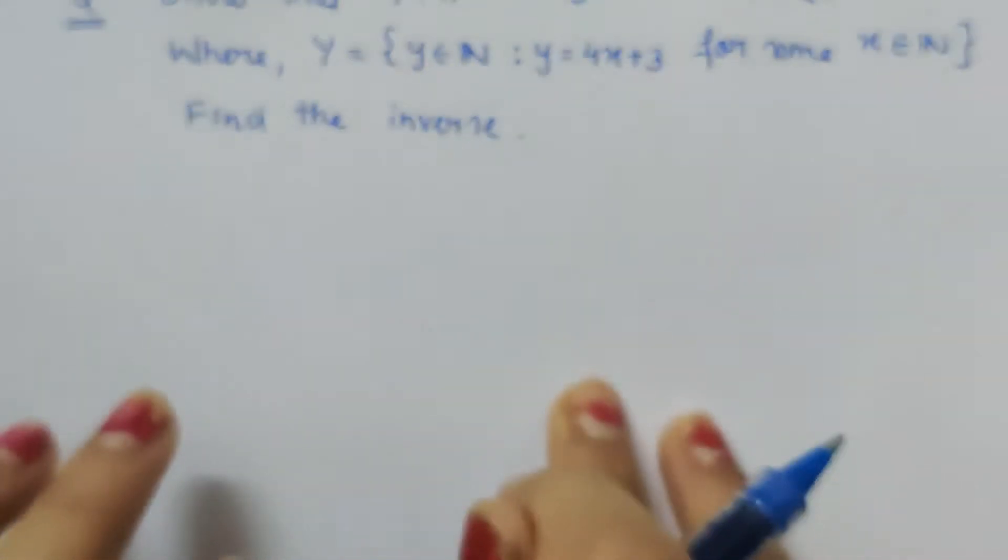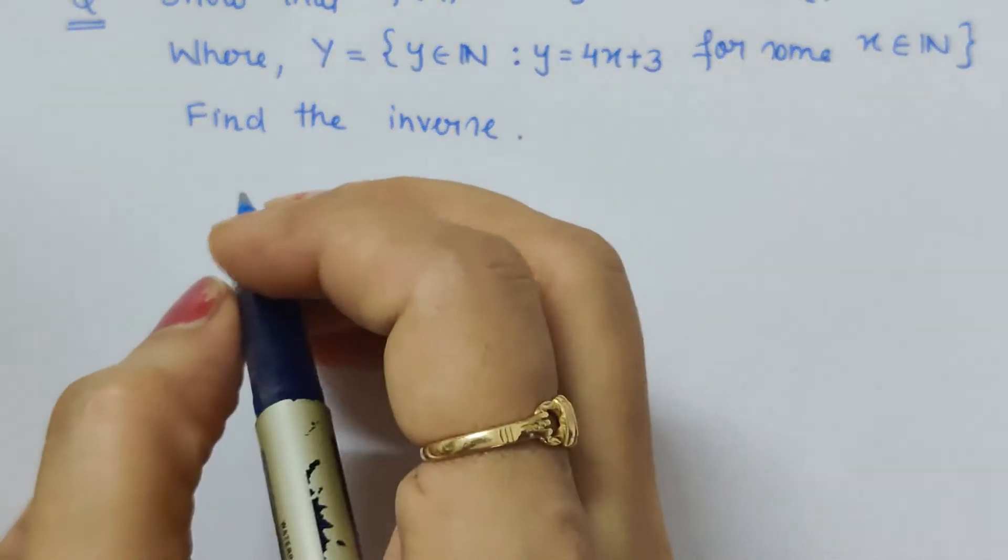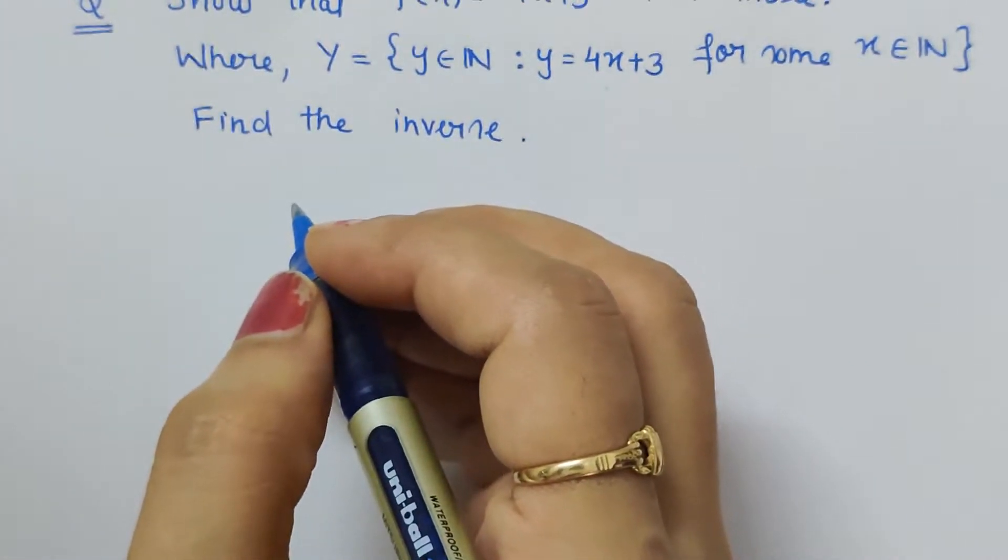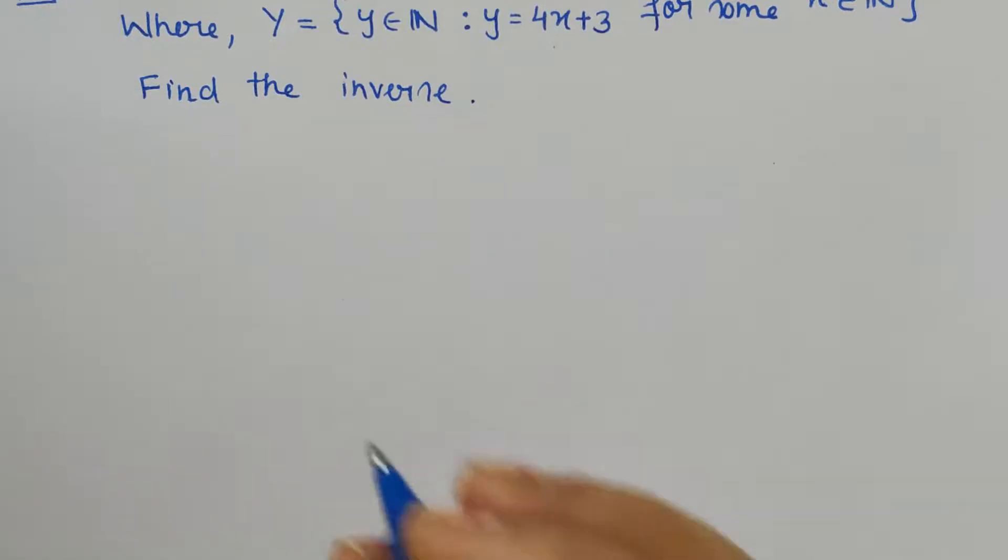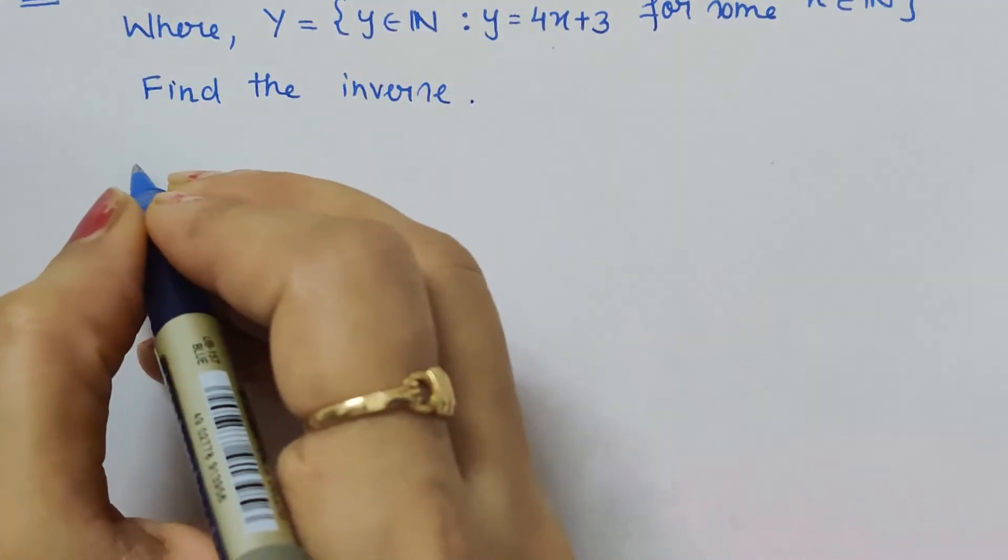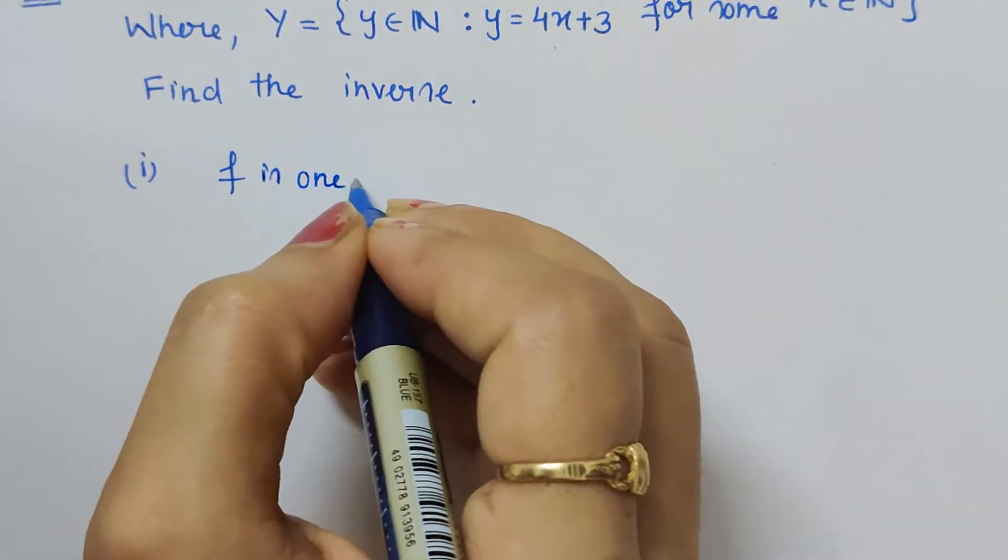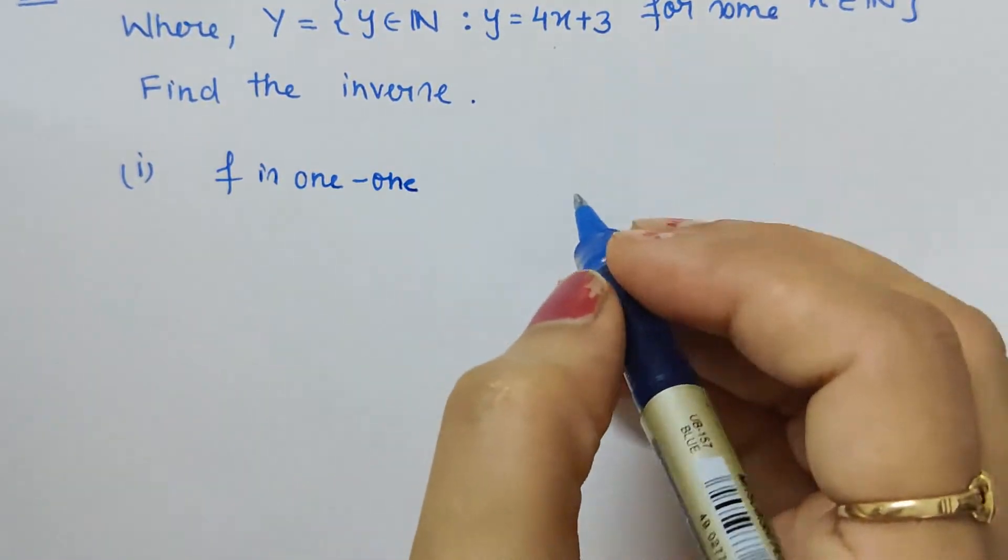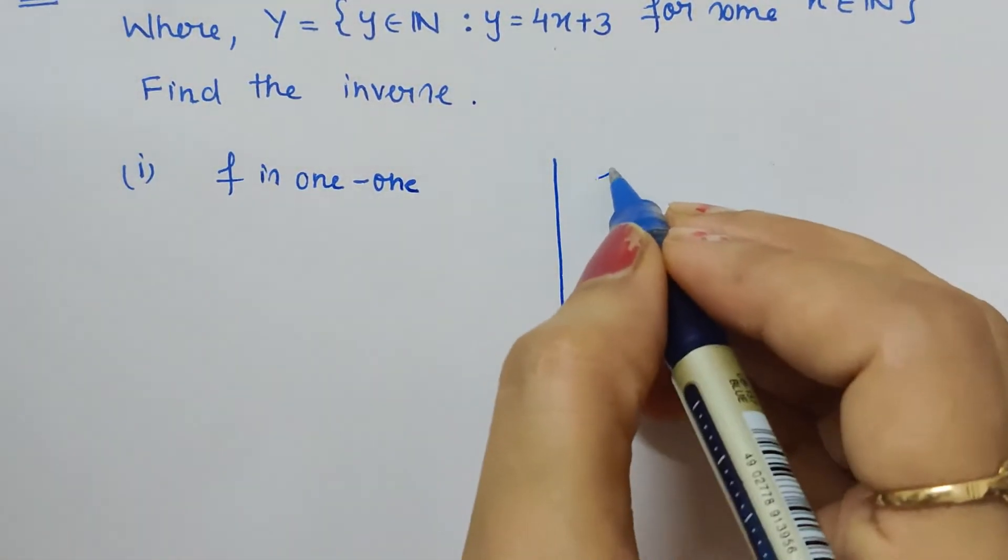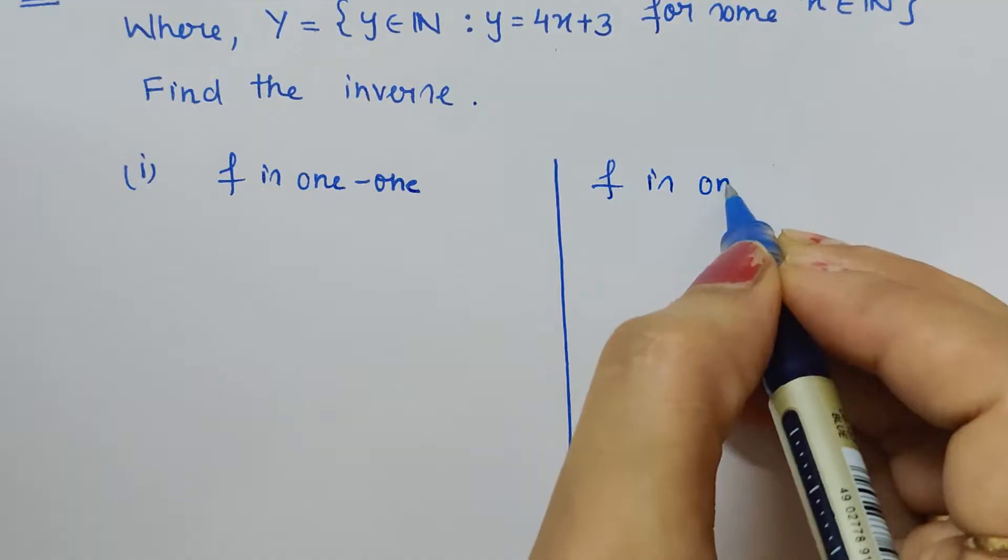The first thing is: a function is said to be invertible if and only if it is one-one and onto. So first we will prove f is one-one, and then we will also show f is onto. If we are able to prove these two things, then we can say that the given function is invertible.